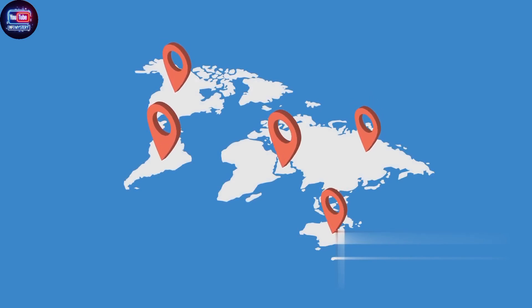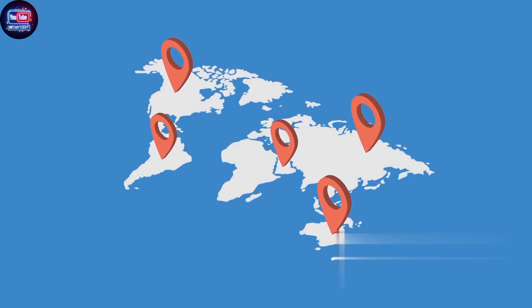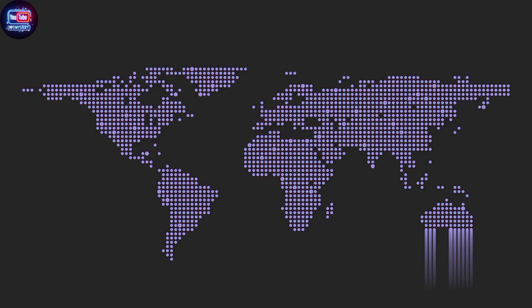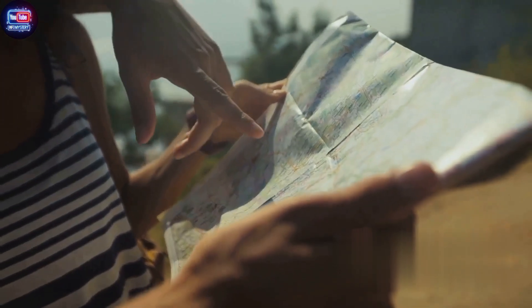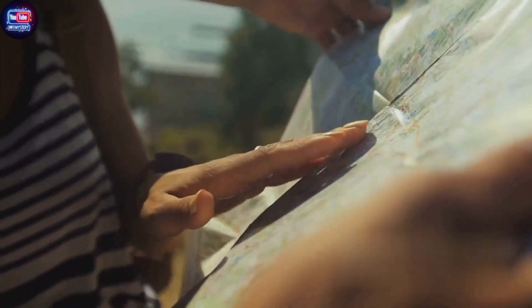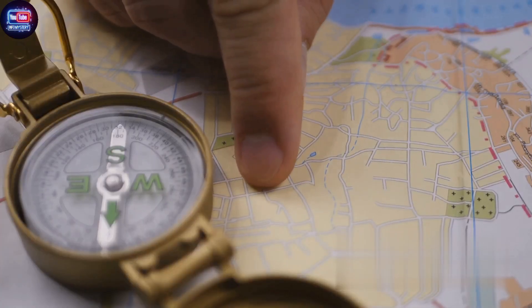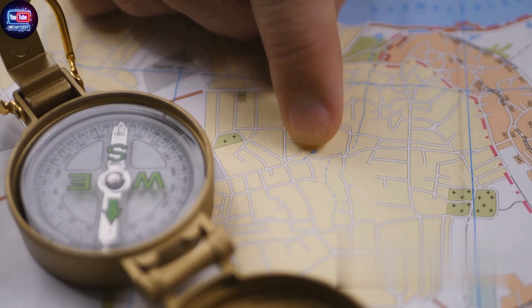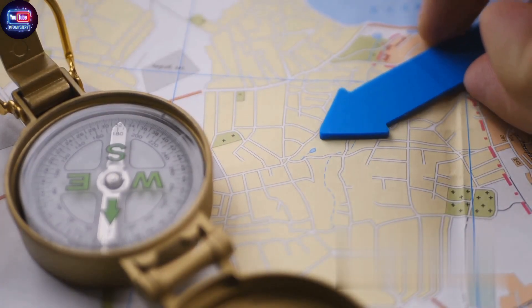Traditionally, we've been conditioned to perceive the world through the lens of distorted maps. These maps, while practical for navigation, greatly misrepresent the true size and position of different countries. But what if we chose to see the world through a different lens — one that is more accurate and gives us a fresh perspective? Imagine the world not as a flat, two-dimensional plane, but as an intricate sphere, with each country represented in its true proportion. Visualize the vast expanses of Africa not as the medium-sized continent we're used to seeing, but as the behemoth it truly is. Picture Greenland not as the colossal landmass we've grown accustomed to, but as the relatively smaller island that it genuinely is.